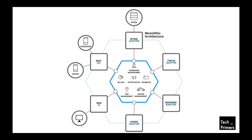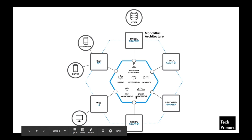If you notice, the application internally had passenger management, billing, notification, payments, Stripe management, and driver management — all composed in a single application. These were different processes connecting to that monolithic application. It is a monolithic architecture because everything connects to a single server. The disadvantage is that if I want to change something in billing, I have to release the whole application — even if I'm not changing notifications or payments, I have to create and release a version of the entire application.